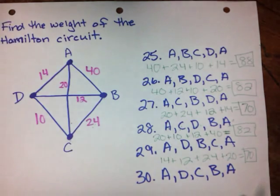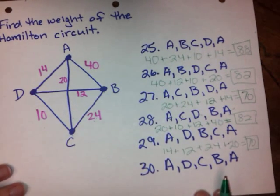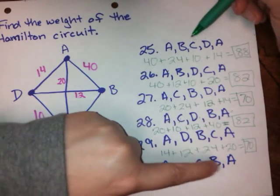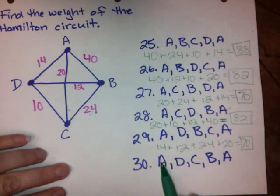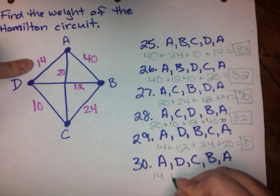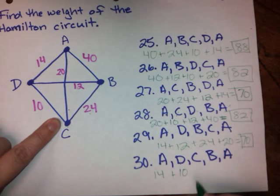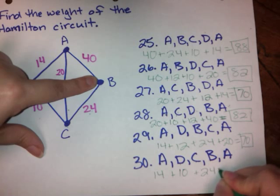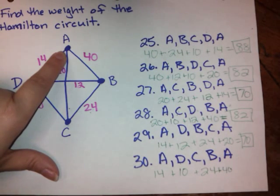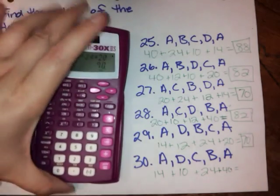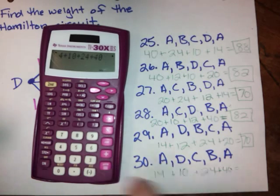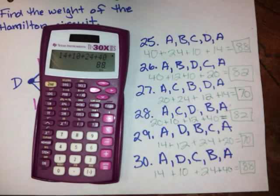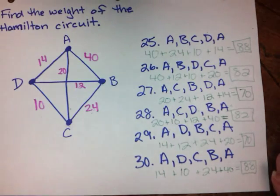And it doesn't take a whole lot of guesswork to figure out that this last one had better equal 88 because that's the only one we haven't paired up yet. And you can see here again, A, D, C, B, A. It's the exact same circuit just going in the opposite direction. So let's go ahead and actually do the work though. Let's make sure that we understand how to find it. A to D, edge A to D has a weight of 14. Edge D to C has a weight of 10. C to B has a weight of 24. B back to A has a weight of 40. And when I add those all together, it had better equal 88. So 14 plus 10 plus 24 plus 40 and that most certainly equals 88. So those are the answers for questions 25 through 30.